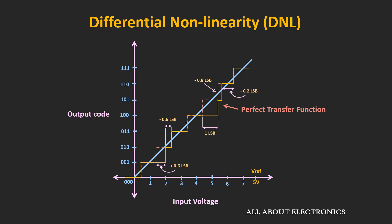In the second transfer function, the step width is equal to 2 LSB, which means the DNL is equal to +1 LSB. And if we look at another step, the step width is only 0.2 LSB, meaning the differential nonlinearity error is equal to −0.8 LSB. So for this given ADC transfer function, the maximum DNL is equal to +1 LSB and the minimum DNL is equal to −0.8 LSB.